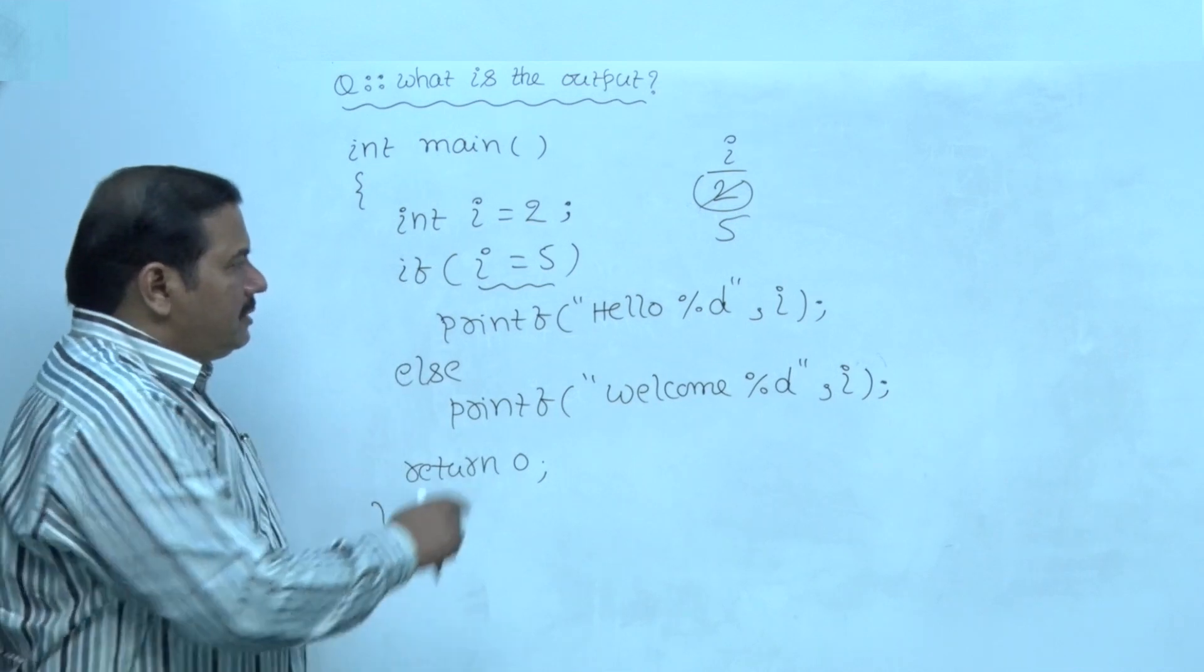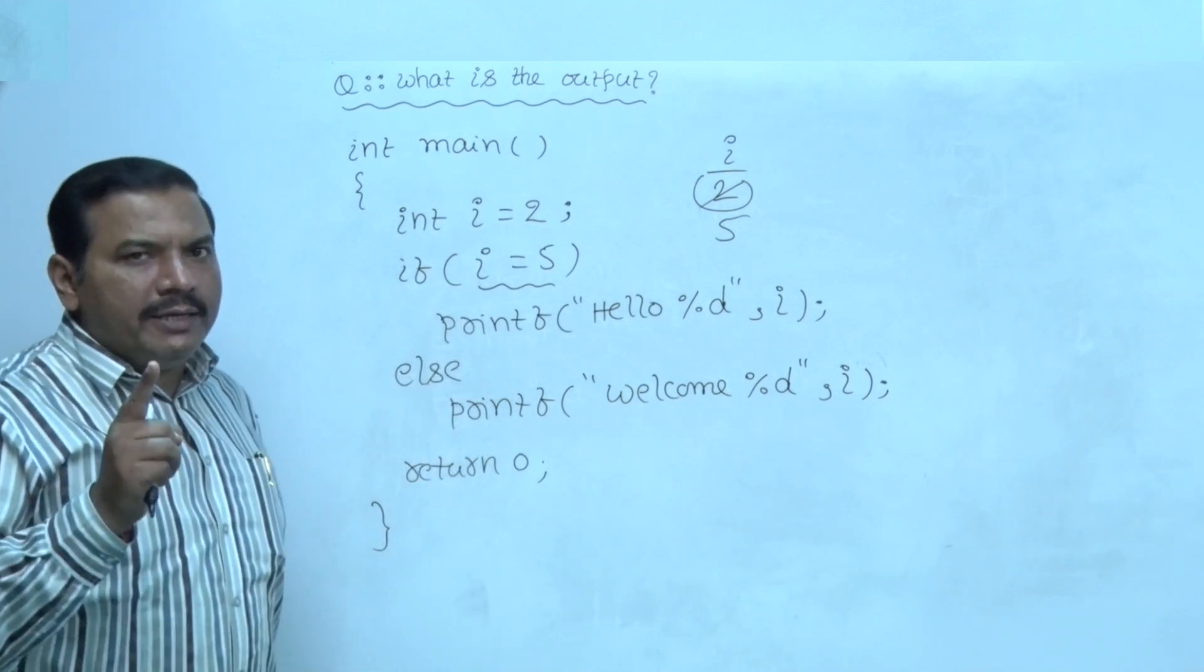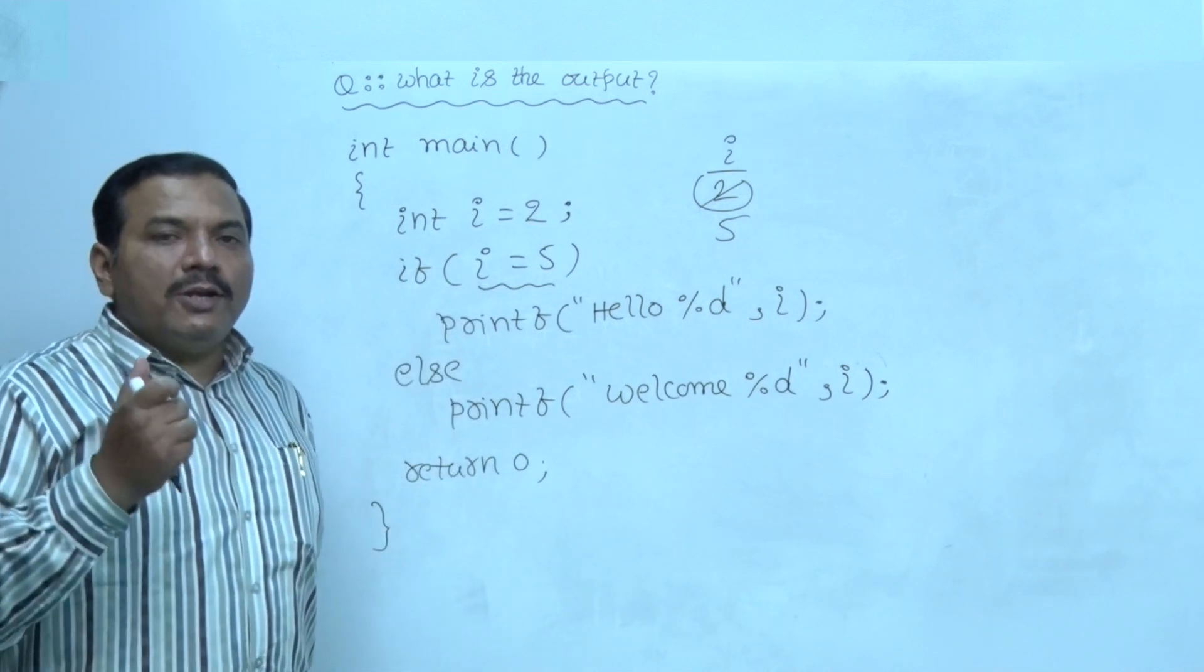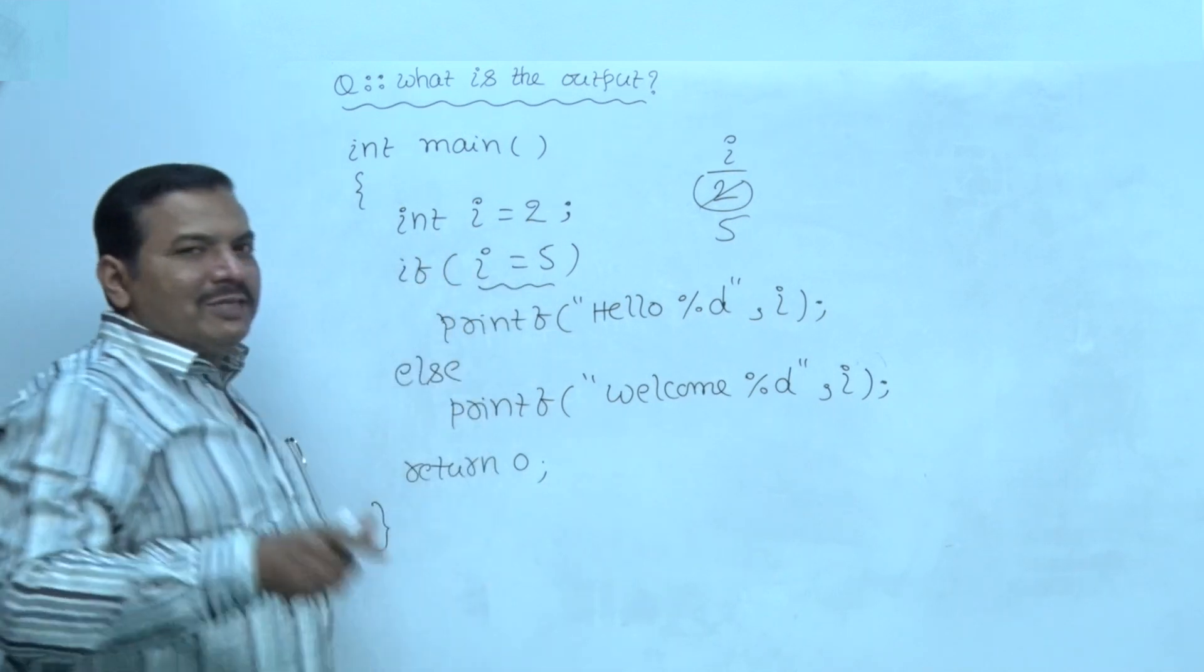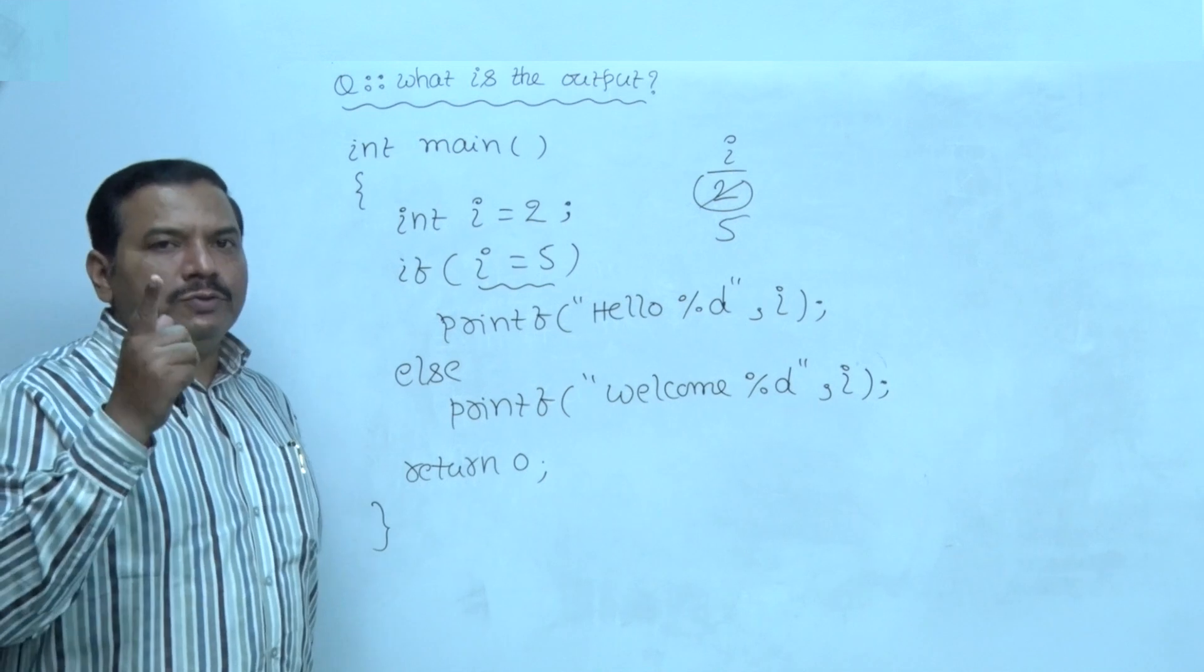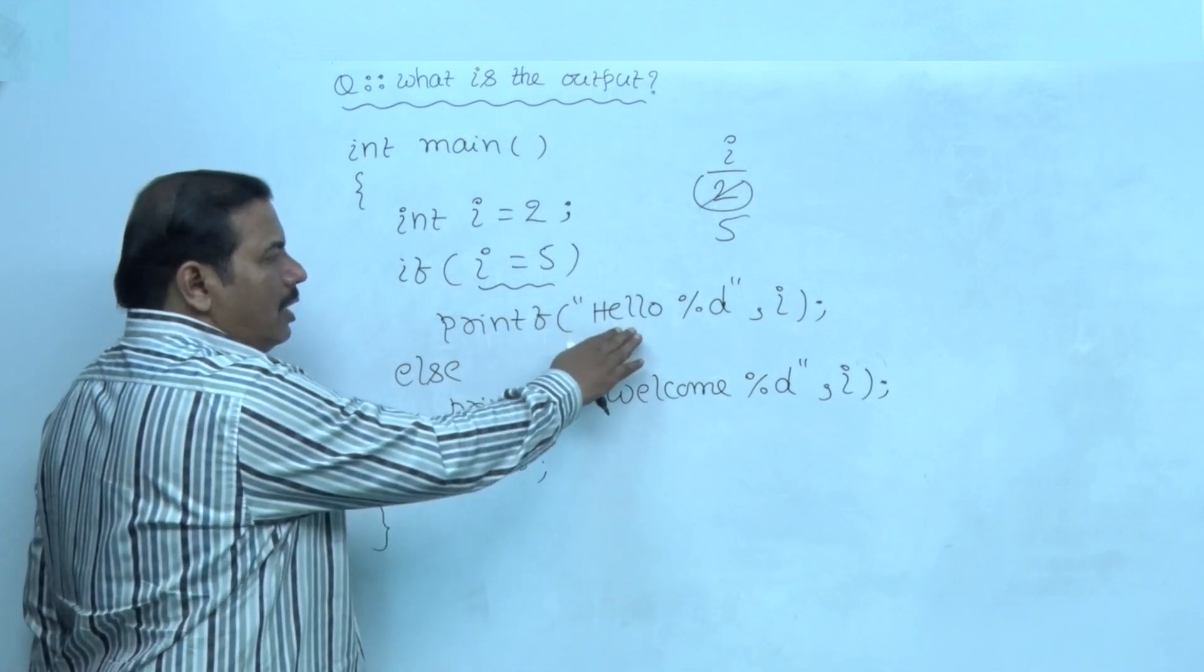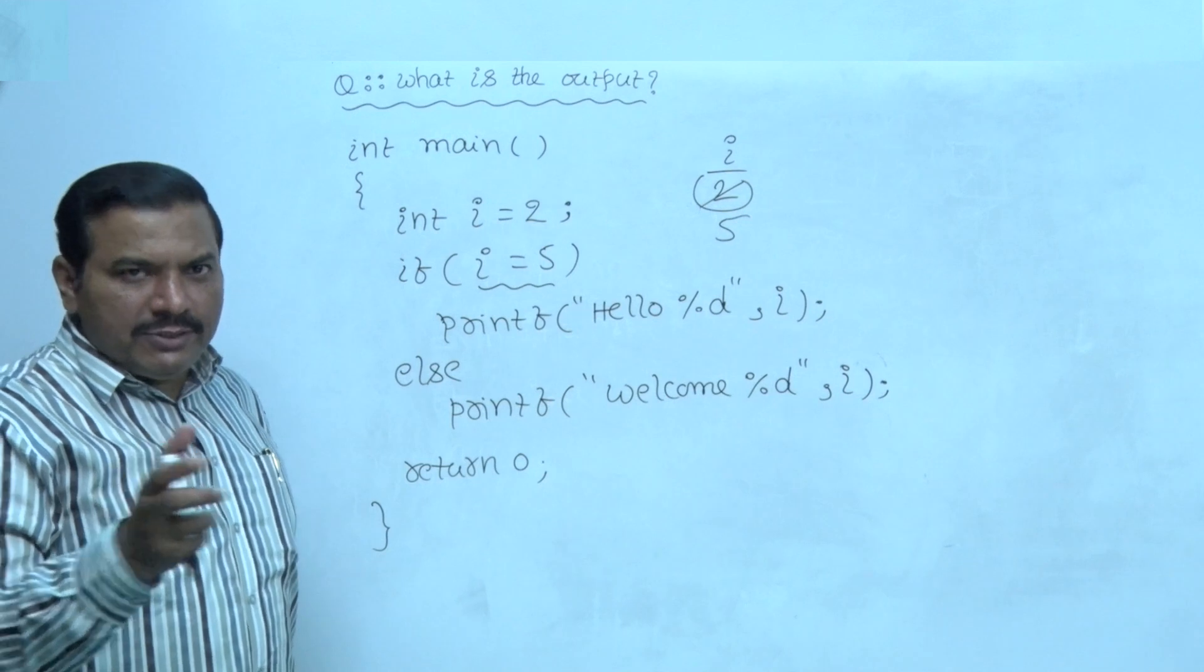Finally, the left side operand value i is 5. It is a non-zero value. Hence, the value of this test expression is true. The code inside if block executes, hello is printed as it is.